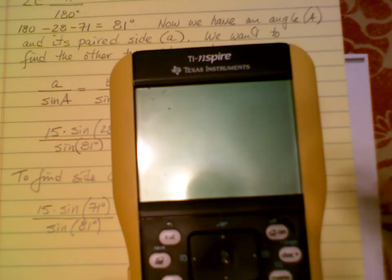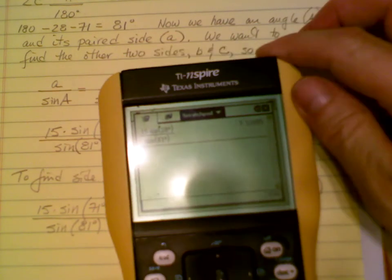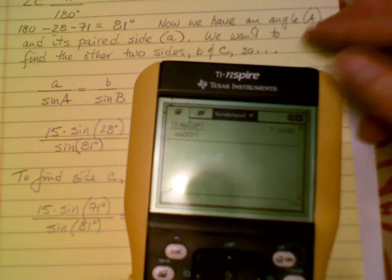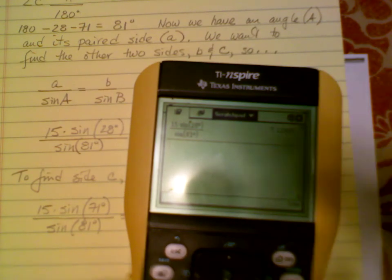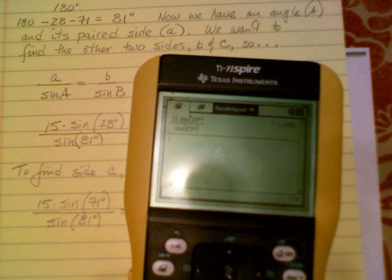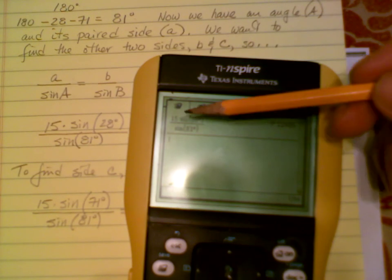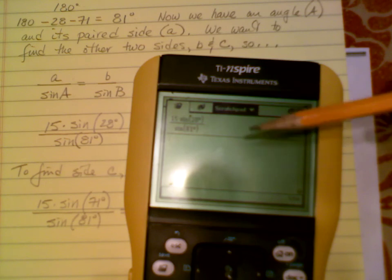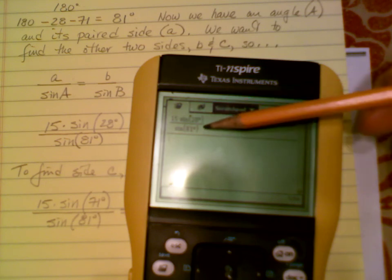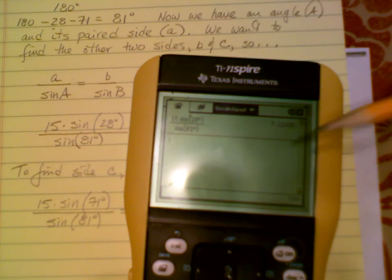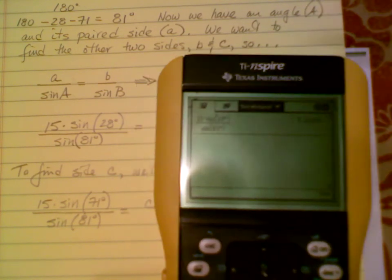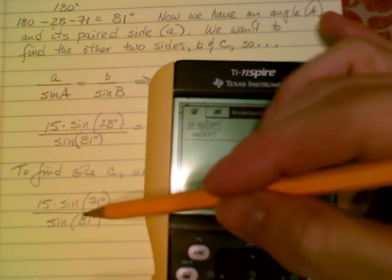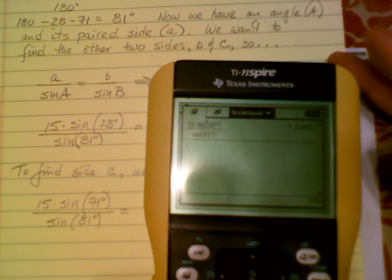Okay, here's the calculator. I already have it set up, so you can see I have 15 times the sine of 28 degrees, and that's divided by the sine of 81 degrees. Now, like I said, what we want to do is change the sine of 28 degrees to the sine of 71 degrees.